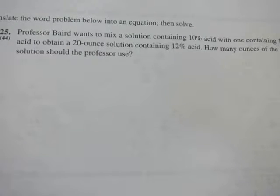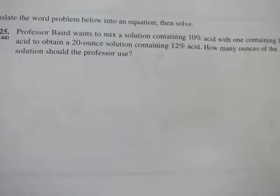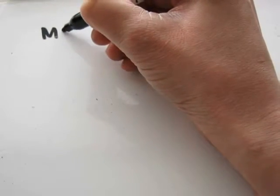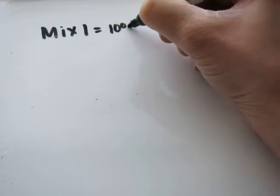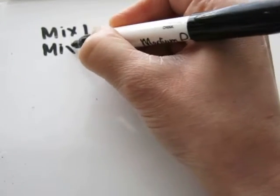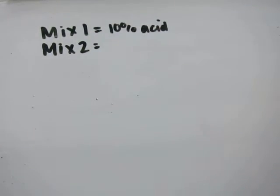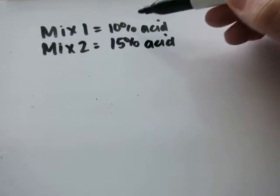Problem 25. Professor Baird wants to mix a solution containing 10% acid with one containing 15% acid to obtain a 20 ounce solution containing 12% acid. How many ounces of the 10% solution should the professor use? Let's start by writing down what we know. Tells us there's a mixture 1 containing 10% of an acid solution. There's a second mixture. We'll call that mixture 2 of a 15% acid solution. Now I want to get rid of this percentage sign.